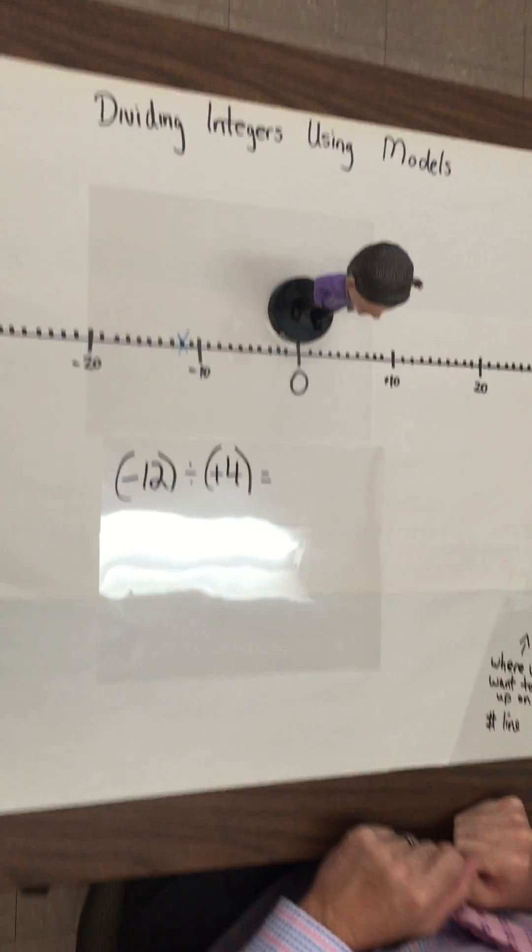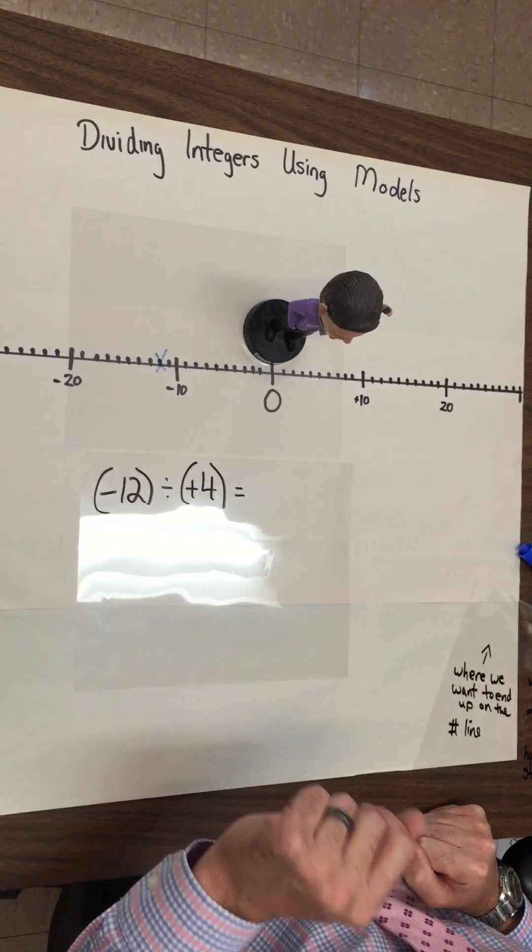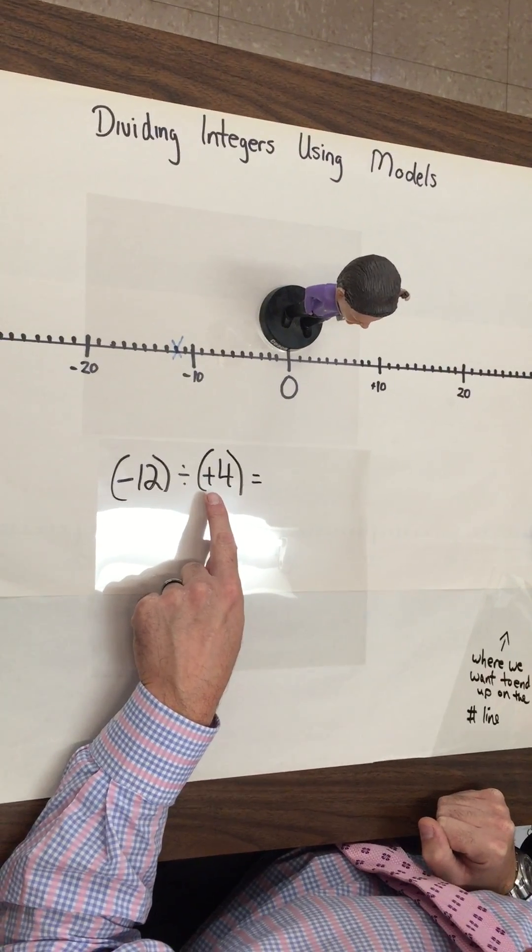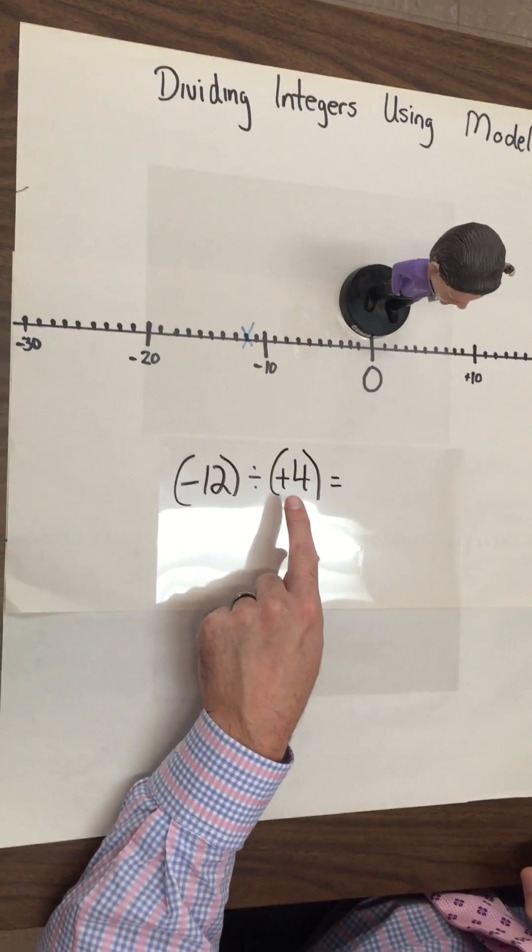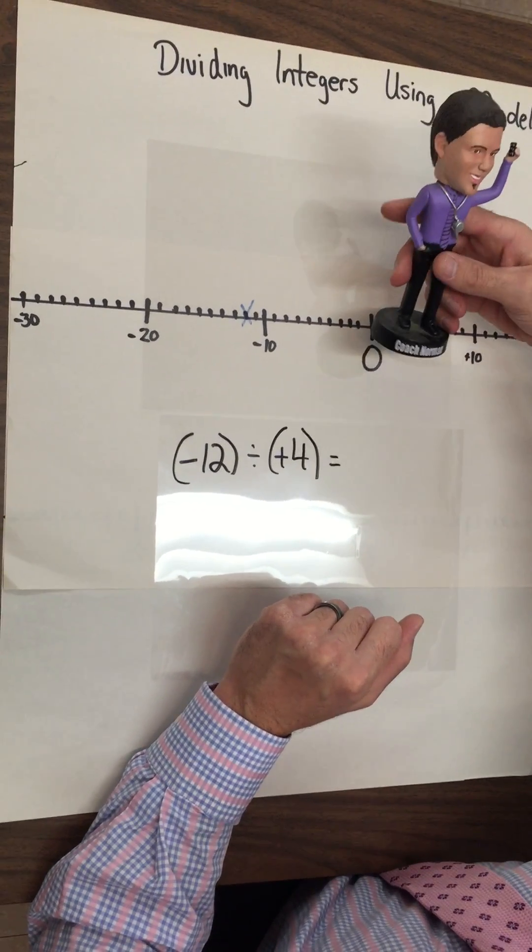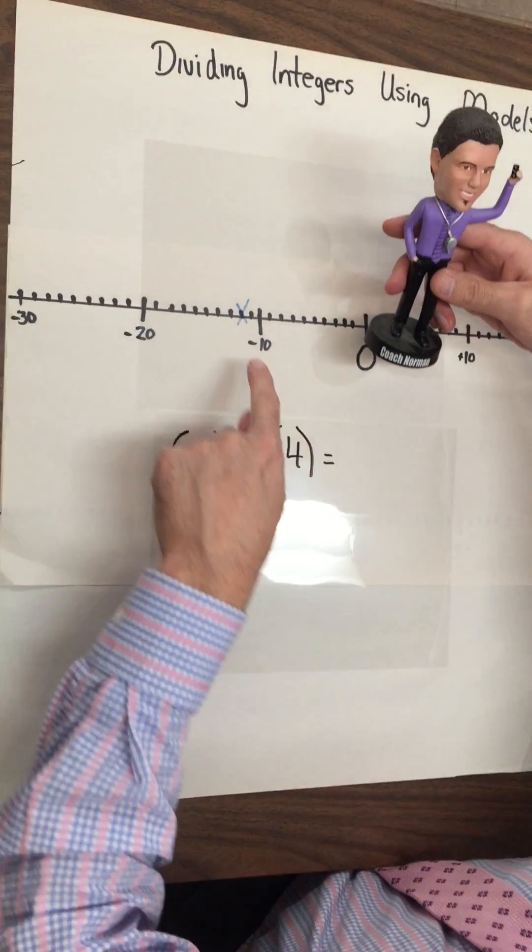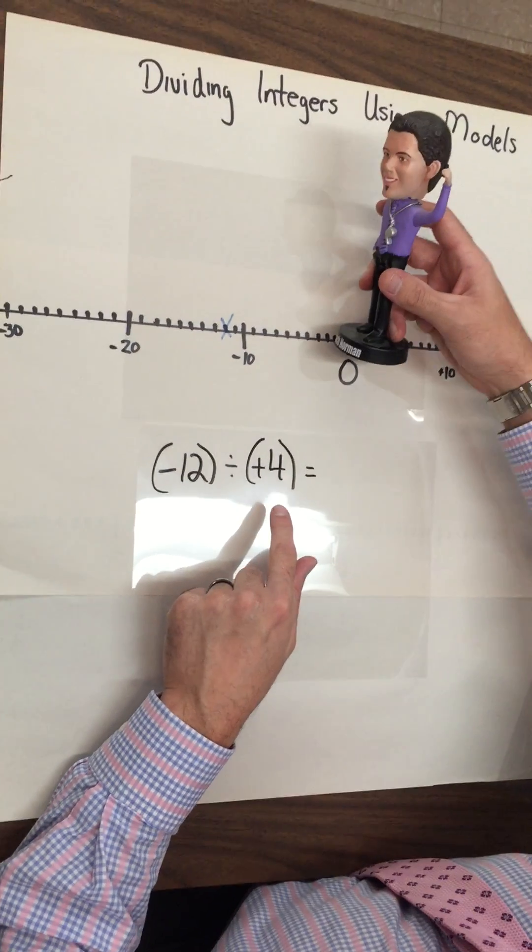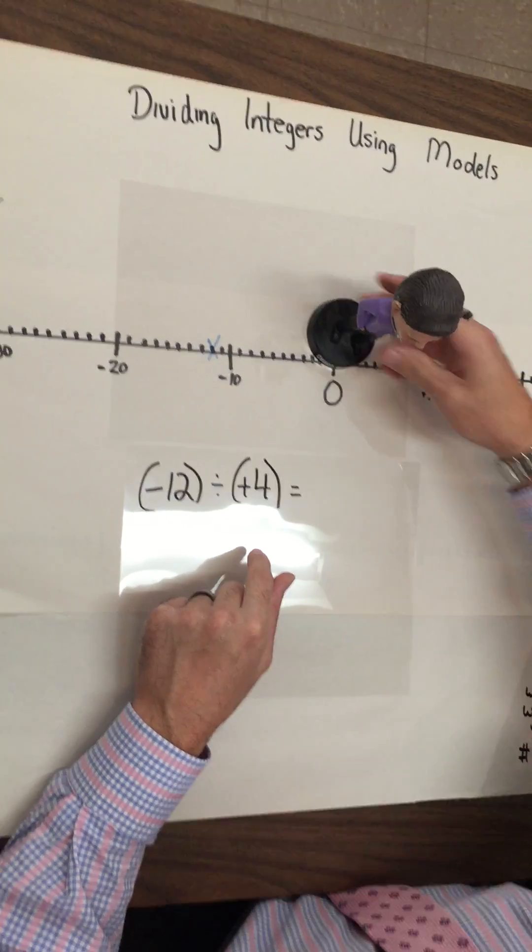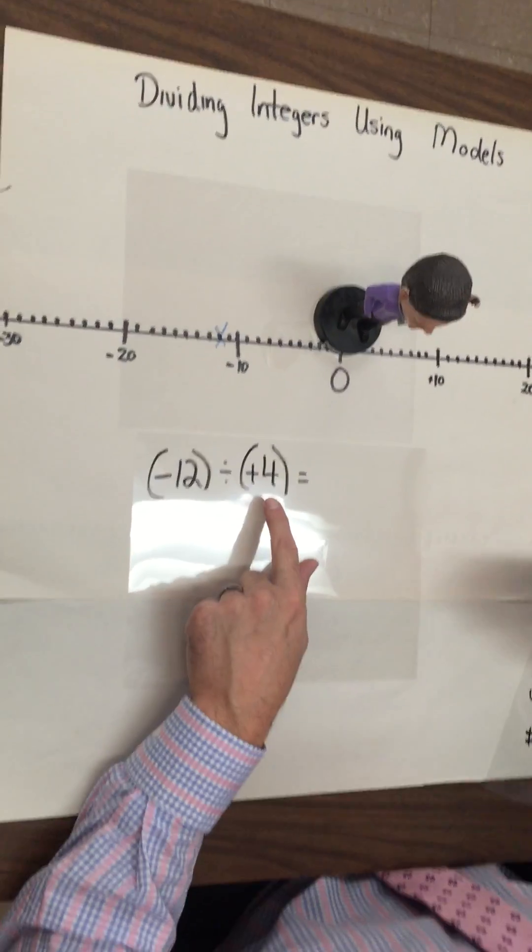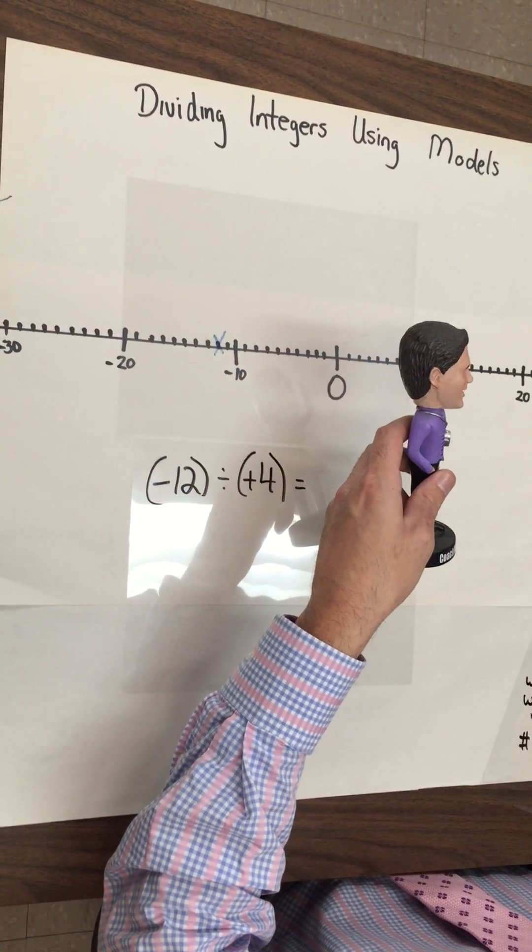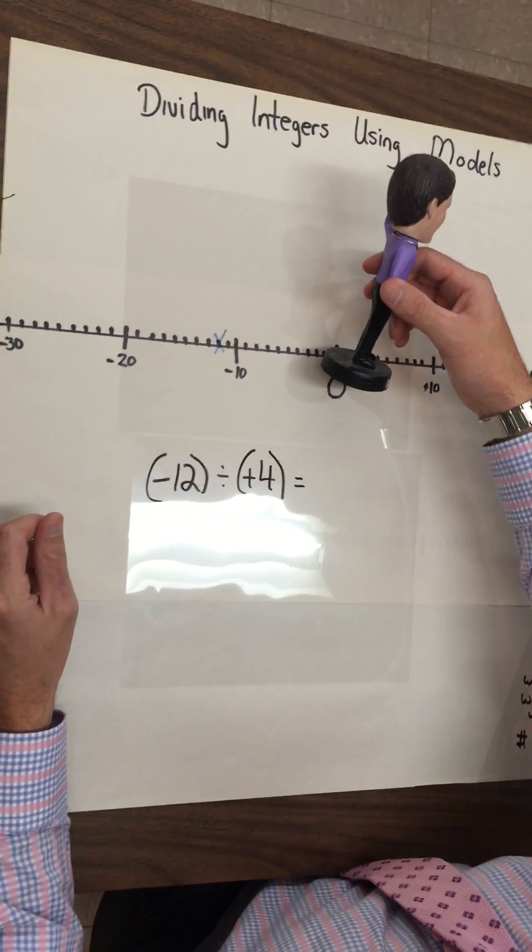The second number plays an important role. First off, we have to look at this symbol here. And we have to look, is the sign a positive or negative? In this case, it's positive. So what that tells me is my little mini-me is going to walk all the way to number 12. And since it's positive, he's going to walk going forward. If, by chance, it was a negative number, he would then walk, moonwalk, backwards, right?